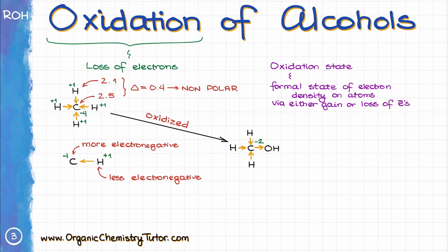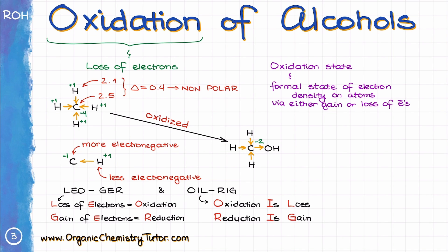Since carbon formally lost electrons — going from oxidation state of negative 4 to negative 2 — it has been oxidized. This is also where the common mnemonics LEO-GER and OIL-RIG come from. LEO stands for losing electrons as oxidation; GER stands for gaining electrons as reduction. OIL stands for oxidation is loss, and RIG stands for reduction is gain.